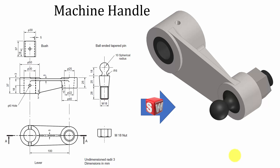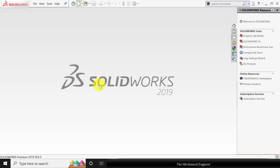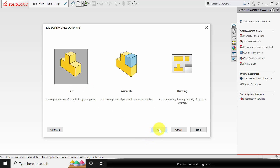Hello everyone, welcome back to The Mechanical Engineer. In this video we are going to model a machine handle. The machine handle has four parts: a lever, a ball, a taper pin, a nut, and a bush. Now let's get started in SolidWorks — click New and choose Part.